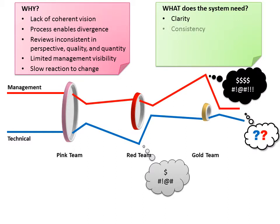We need a clear and coherent vision for our proposed solution applied consistently across all content, with a process flexible enough for rapid mid-course corrections. We need to provide accurate progress and status to team members and executive leadership, and a method to reliably determine estimated proposal costs. How can we achieve these objectives?